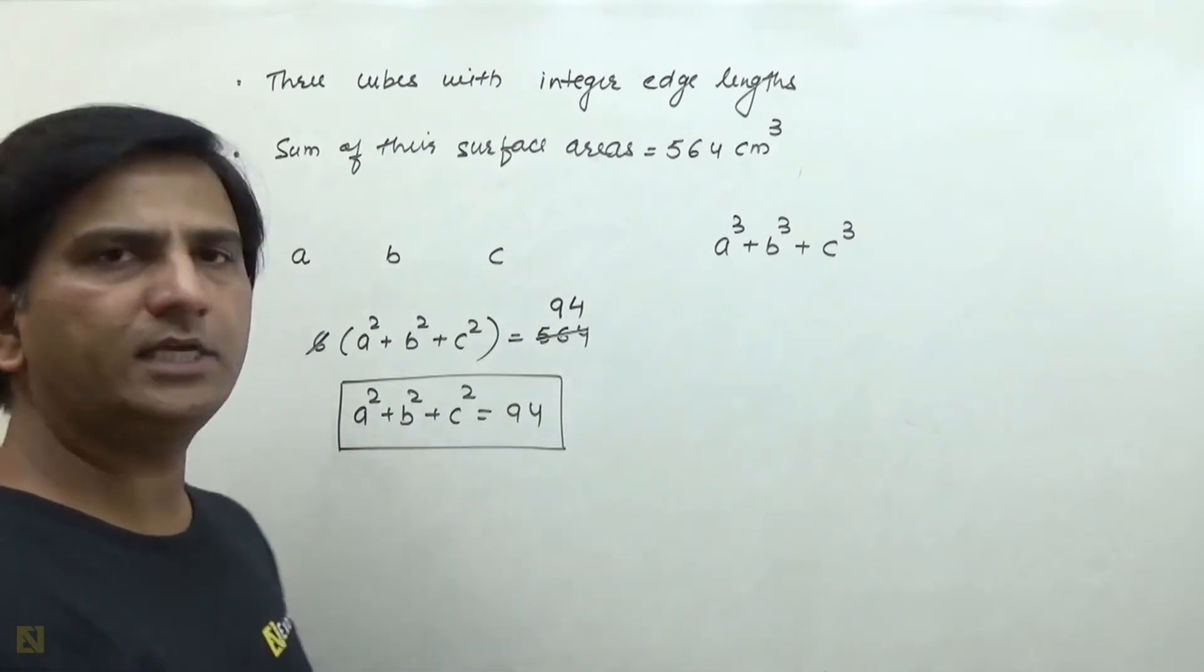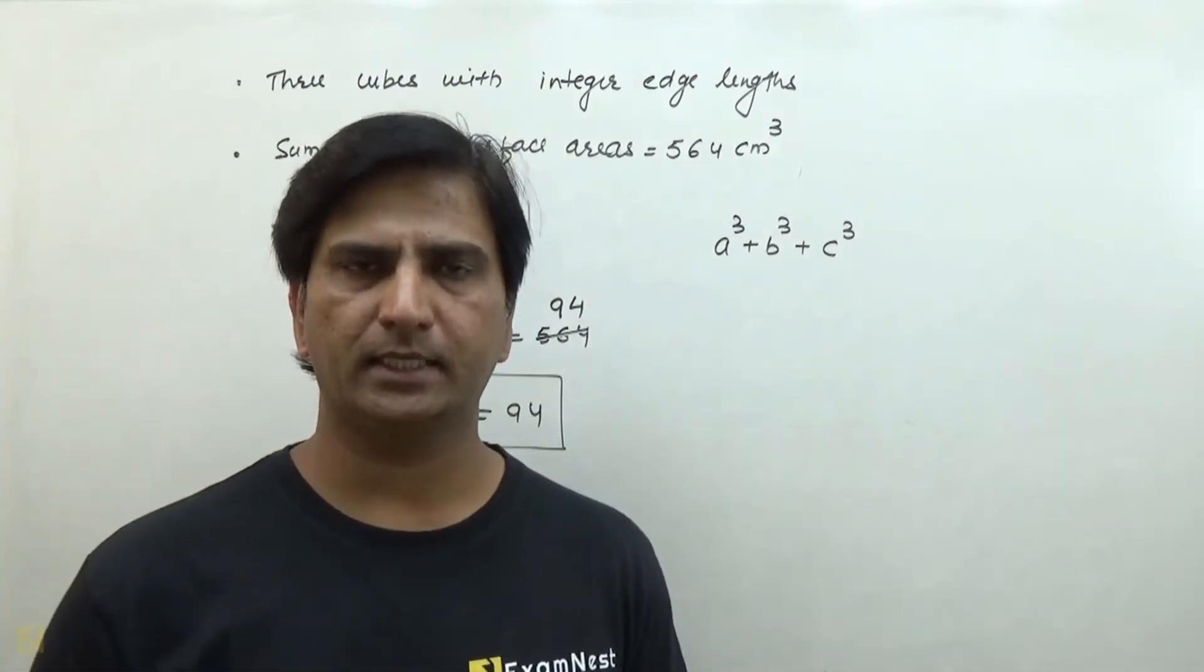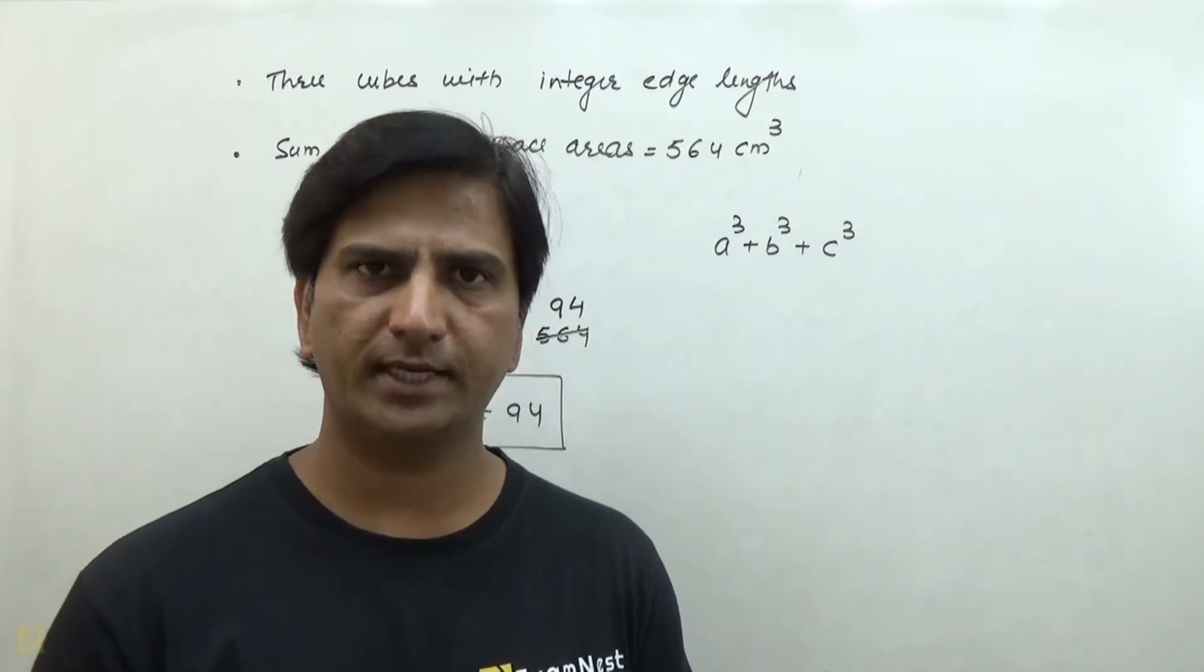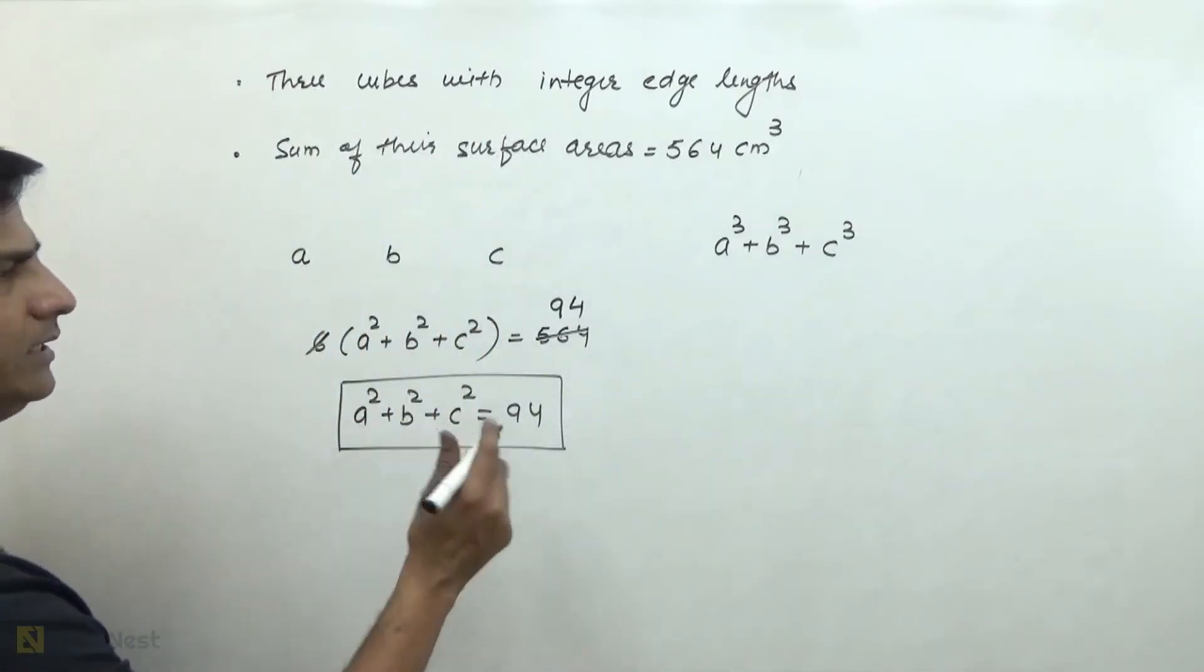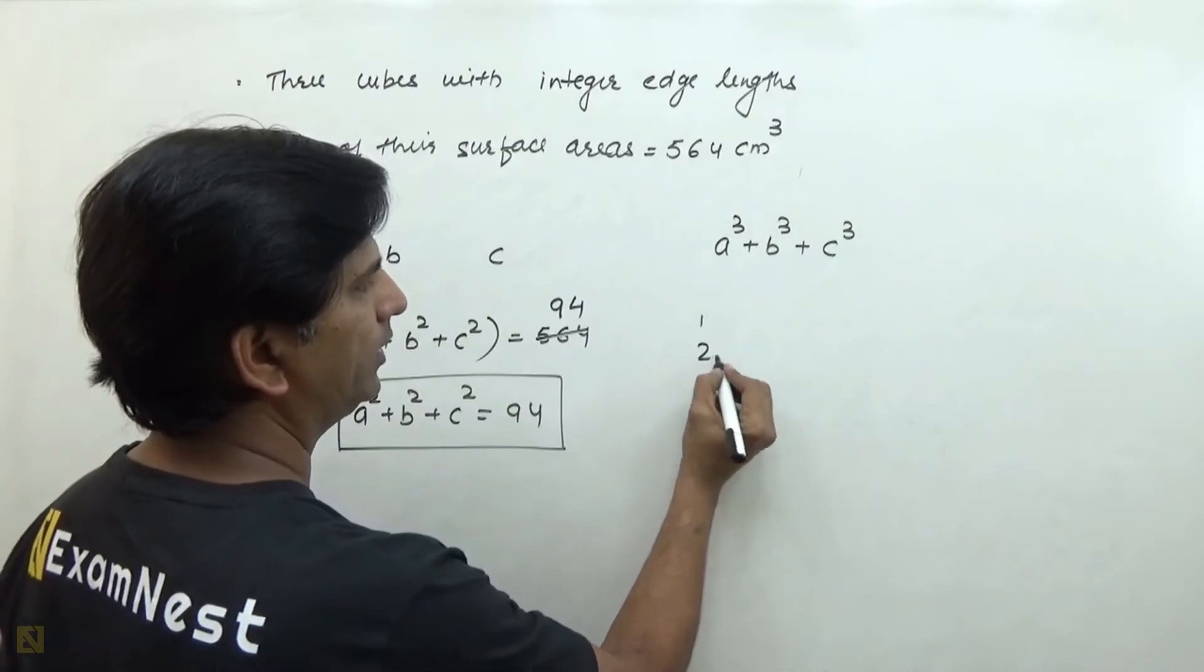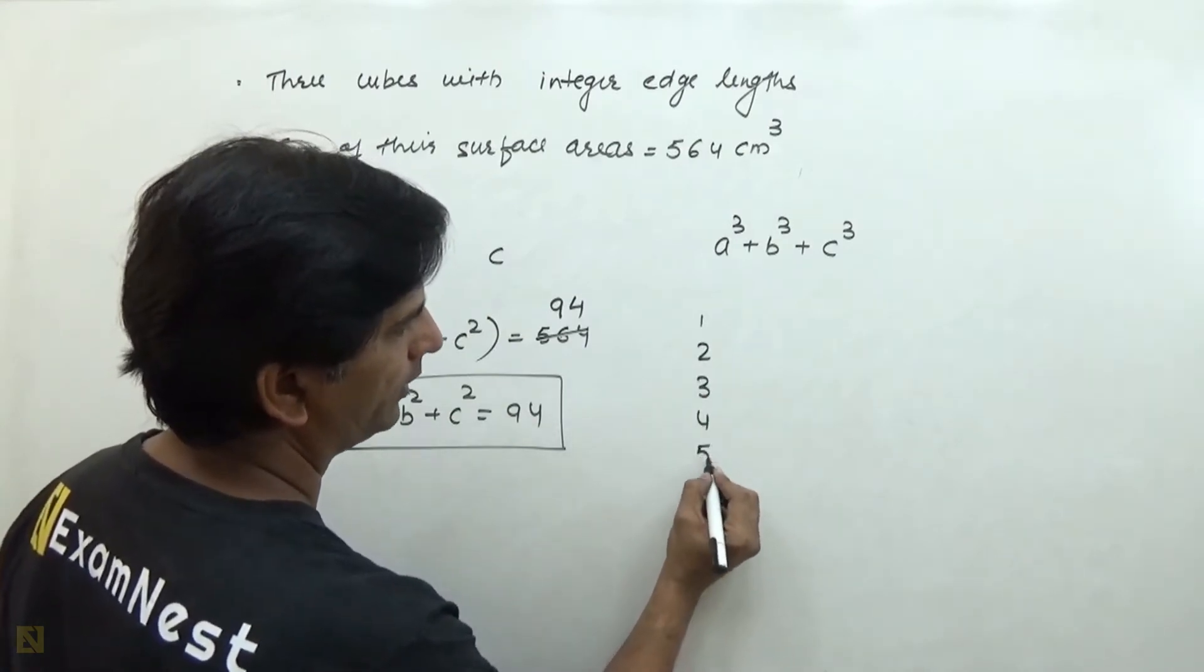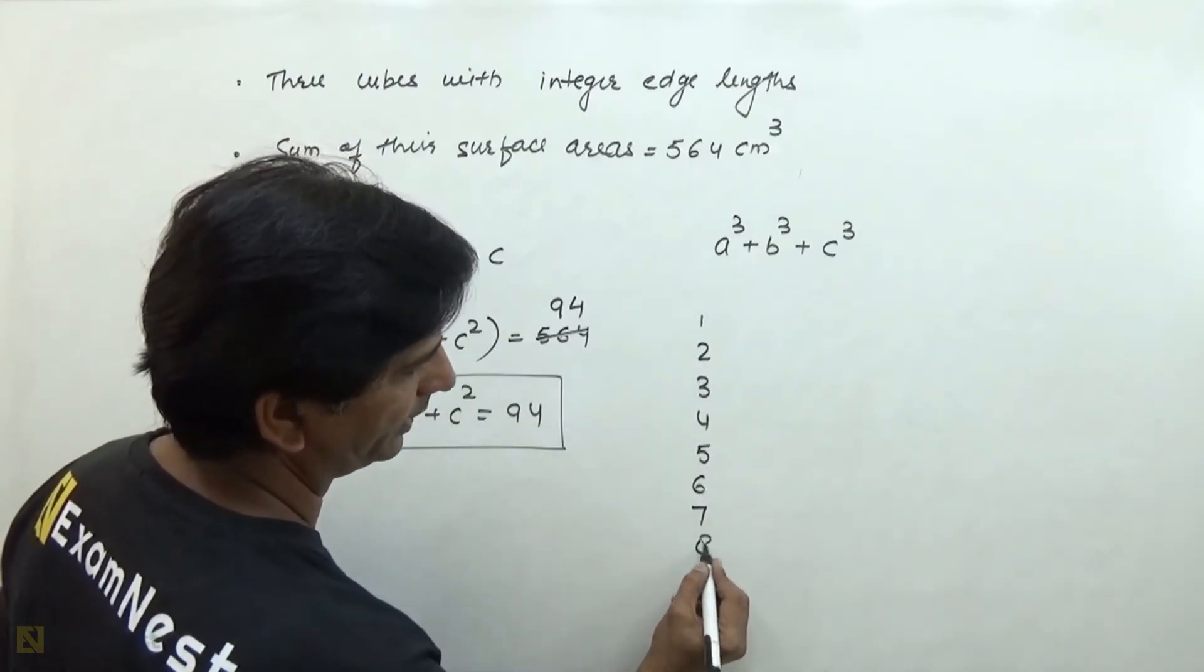In any case, we cannot take the value of 10 or above because the square of 10 is 100. So A, B, and C we have to choose from 1, 2, 3, 4, 5, 6, 7, 8, and 9.